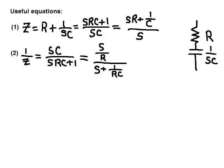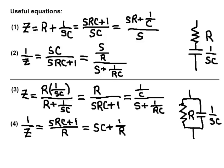Both are written in standard polynomial form. Equation 3 is the parallel equivalence of a resistor and capacitor. Equation 4 is the inverse of that. Both are written in standard polynomial form.